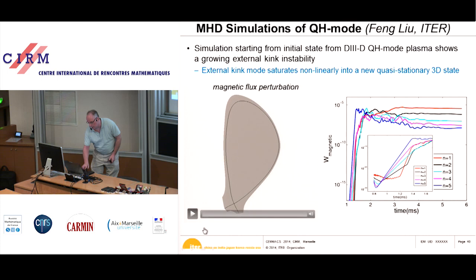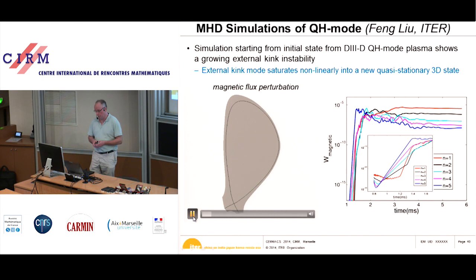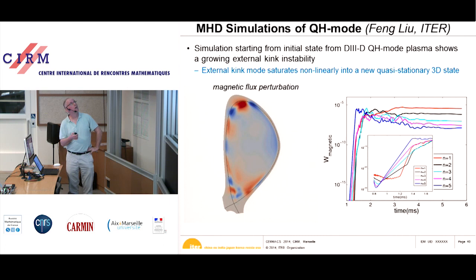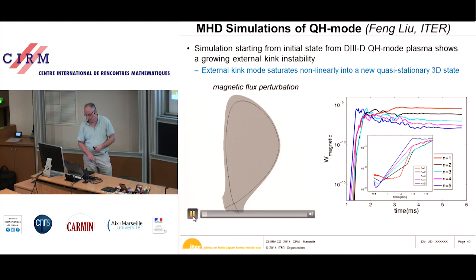We simulate a D3D plasma, taking one of their actual plasmas as an initial state and letting the simulation run. An instability develops as in experiment — rotating at a few kilohertz — in a steady saturated state. It starts with toroidal mode number N=5 but eventually leads to a saturated state where N=1 is the dominant mode number. We believe this is the edge-harmonic oscillation observed experimentally, and the structure and frequencies agree with experiment.